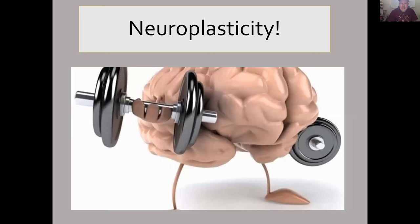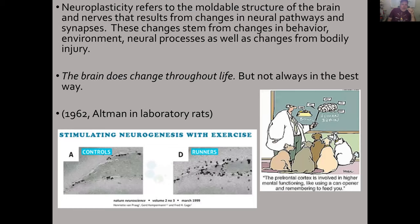Now we're going to discuss the concept of neuroplasticity — the idea that the brain is a malleable plastic structure that can change under the right conditions. It can also change under the wrong conditions, and I'll briefly mention that in a minute. Neuroplasticity refers to the moldable structures of the brain and nerves that result from changes in neural pathways and synapses. A synapse is simply the space between one neuron connecting to another. These changes stem from changes in behavior, environment, neural processes, as well as changes from bodily injury.